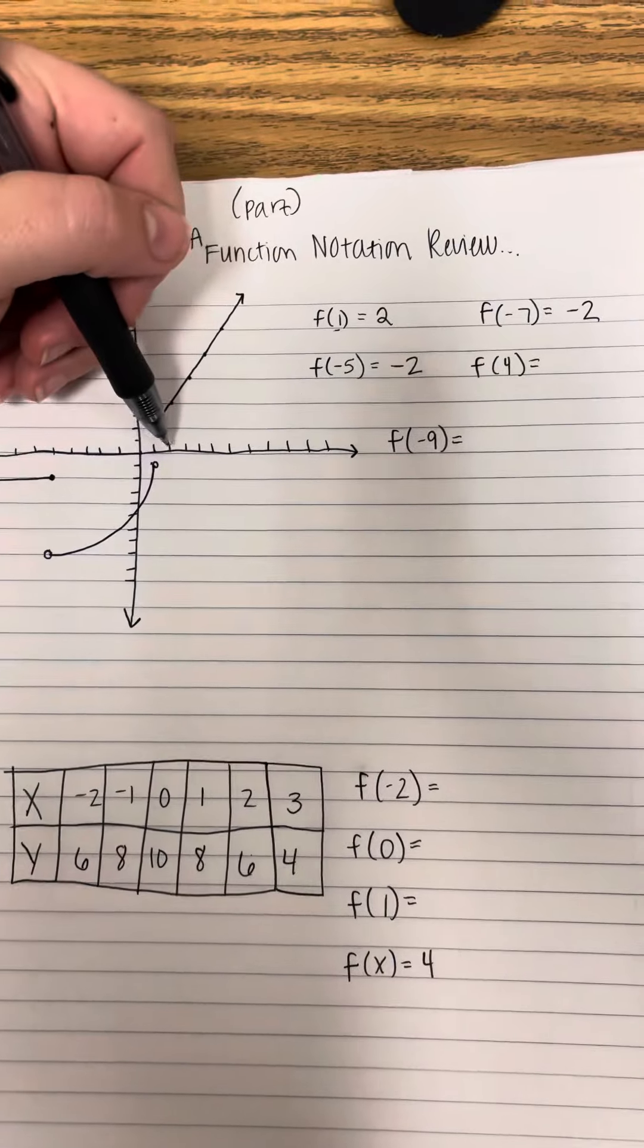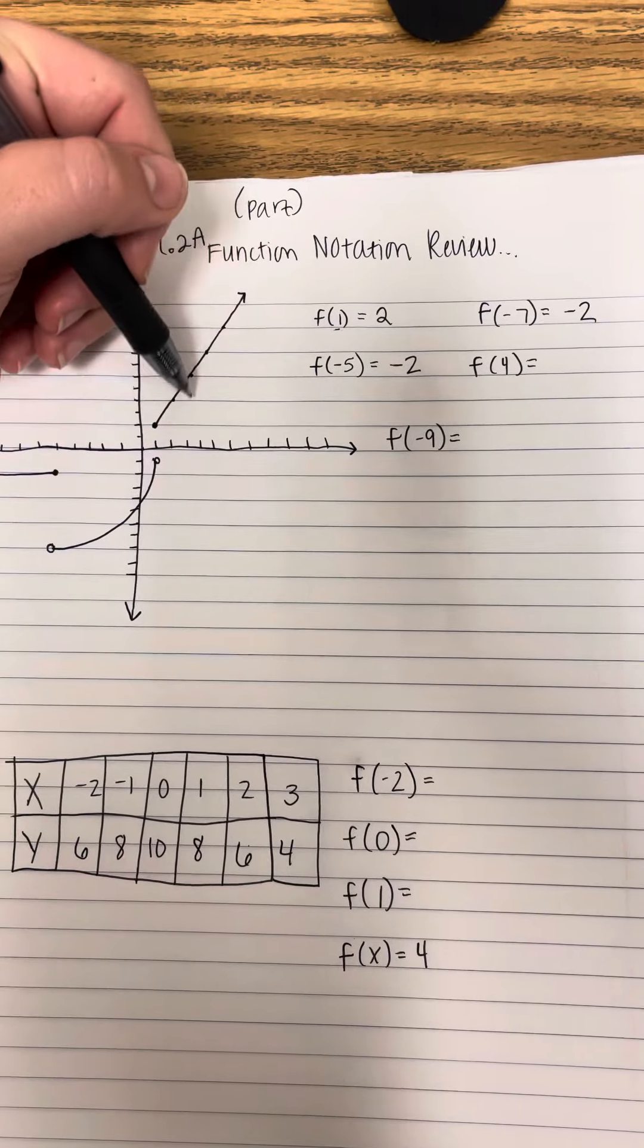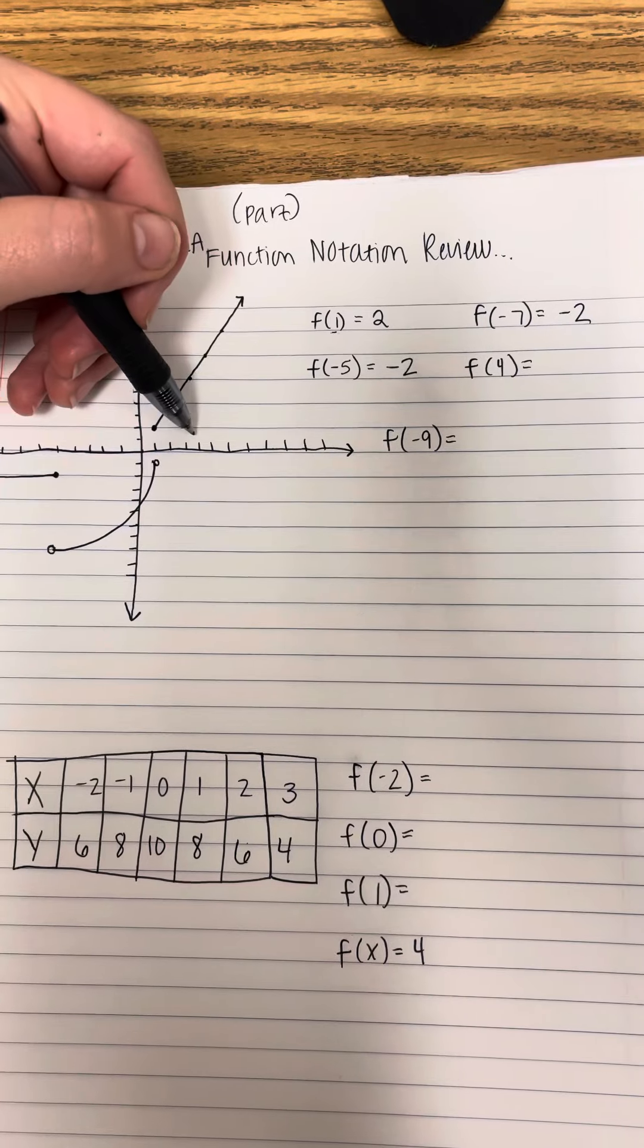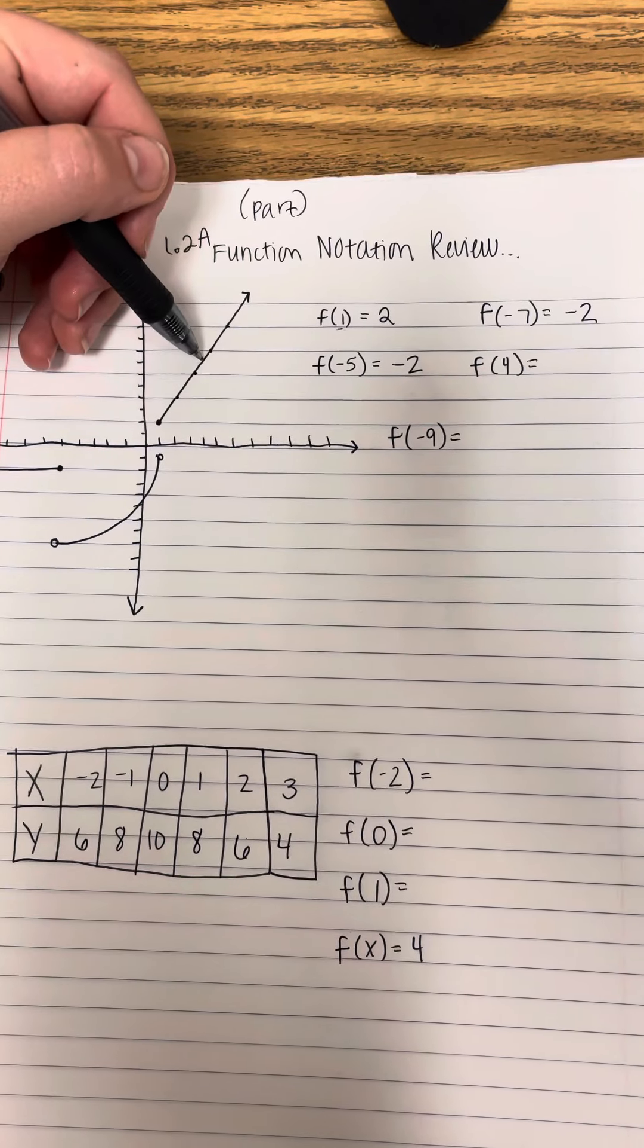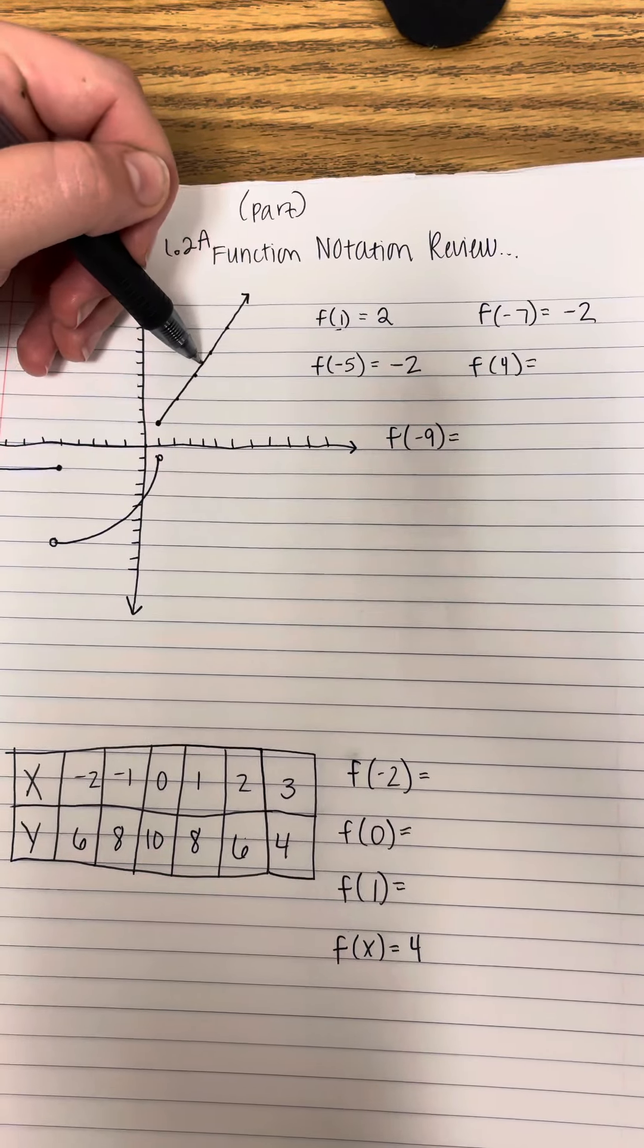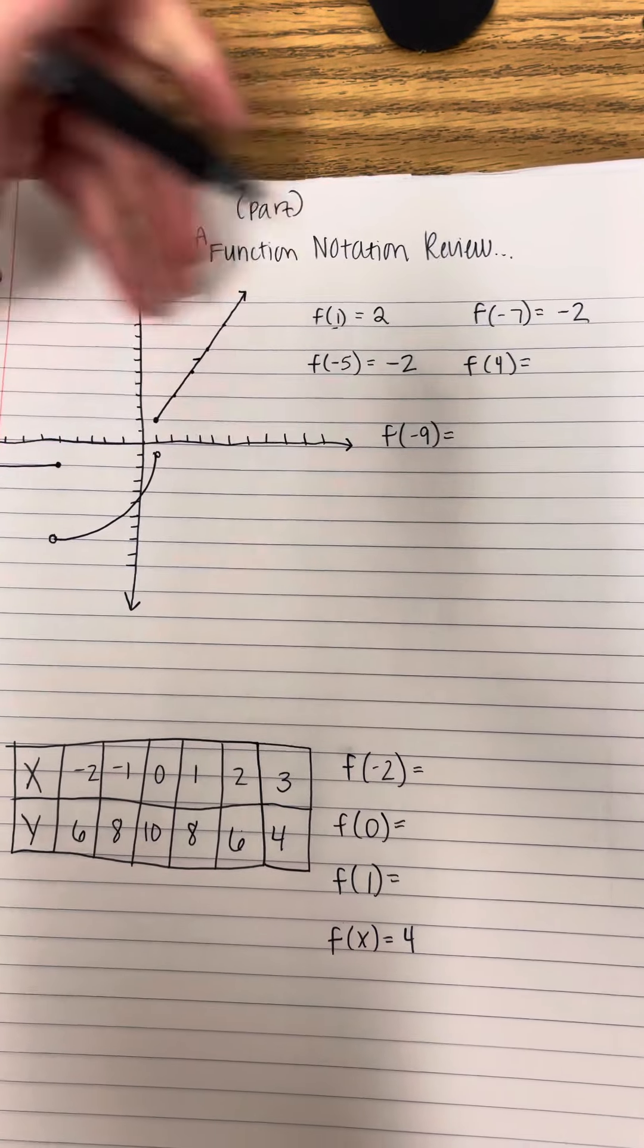When x is 4, 1, 2, 3, 4, y is right here. Let's see, 1, 2, 3, 7.